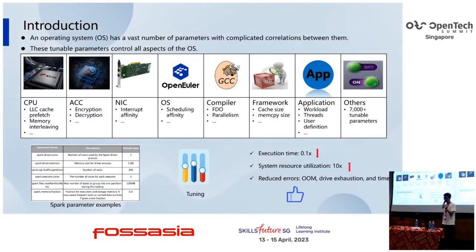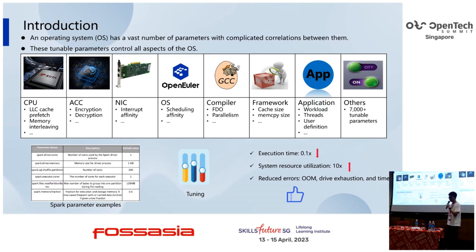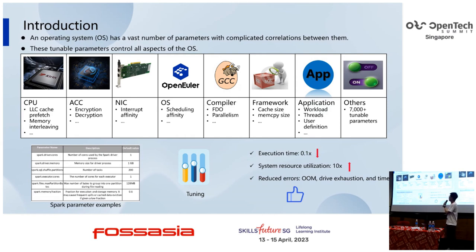I will give an introduction about ATUN. Operating systems have a large number of parameters and complicated correlations between them. Those tunable parameters control all aspects of the operating system. For example, in Spark, there are so many tunable values, and if we use the default values, they can't get the best performance.